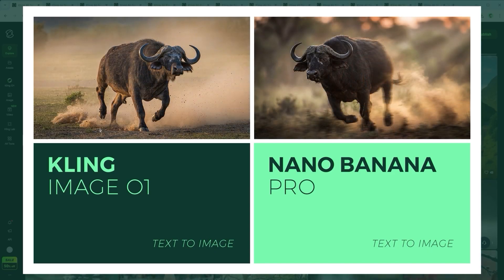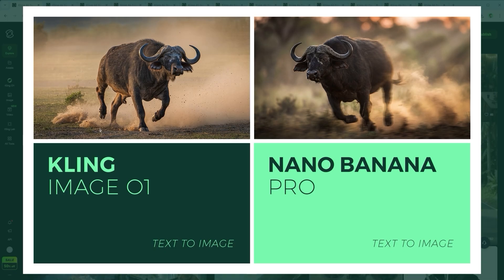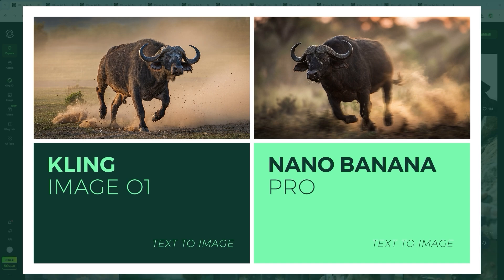Example 3: Motion Physics — the Dynamic Shutter Challenge. Now we leave the studio physics behind. This challenge tests the model's understanding of camera optics. We asked for a charging buffalo with heavy motion blur. The AI cannot just freeze the animal — it must smear the background and legs to convey velocity while keeping the eyes razor sharp. The winning criterion: cinematic energy and physically accurate motion blur.